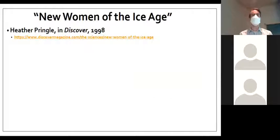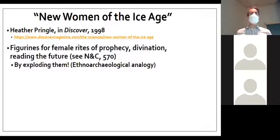The article was called New Women of the Ice Age. And what this article did was basically take some of the critique and the reassessment that we have been talking about, reassessing the role of women and the ideas of hunting and gathering, and looked at these figurines in a different way. And what Heather Pringle talked about is they didn't really know what exactly the figurines were for, but one of the things that they kind of speculated about is that the females or women were using these in order to try to figure out the future.